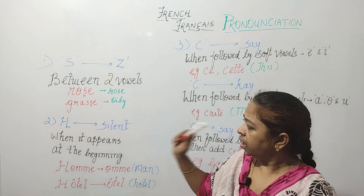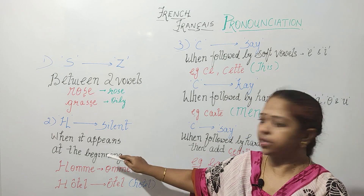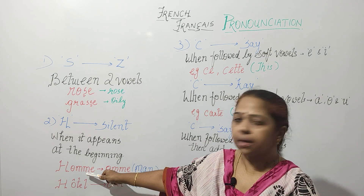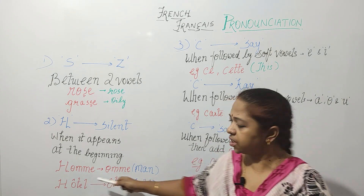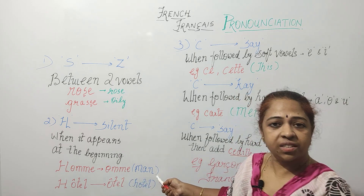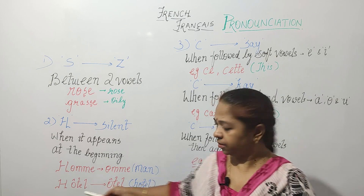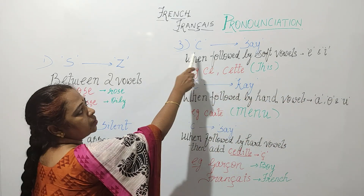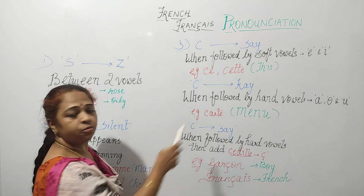H is usually silent when it appears at the beginning of a word. For example, 'homme' is not pronounced as 'homme' but as 'om,' which means man. Similarly, 'hôtel' is pronounced as 'otel.'